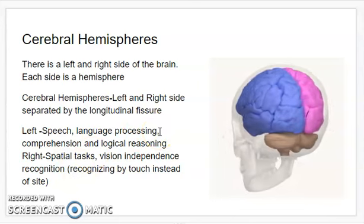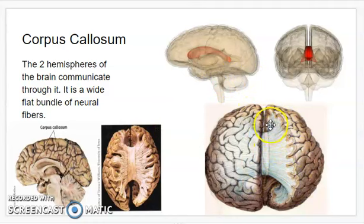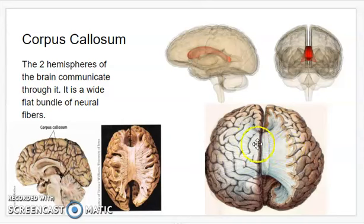Number two on your notes is the corpus callosum. The corpus callosum connects the two sides of the brain together. If you were to cut away a section of the brain and go down far enough, you'd see something that almost looks like tendon — it stretches and connects the right side and the left side together. Think of it as a freeway, a really big freeway where all thoughts are able to pass across and communicate. It's a wide, flat bundle of neural fibers.